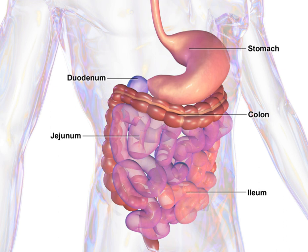The tract may also be divided into foregut, midgut, and hindgut, reflecting the embryological origin of each segment. The whole human GI tract is about 9 meters long at autopsy. It is considerably shorter in the living body because the intestines, which are tubes of smooth muscle tissue, maintain constant muscle tone in a halfway tense state but can relax in spots to allow for local distention and peristalsis. The gastrointestinal tract contains trillions of microbes, with some 4,000 different strains of bacteria having diverse roles in maintenance of immune health and metabolism.